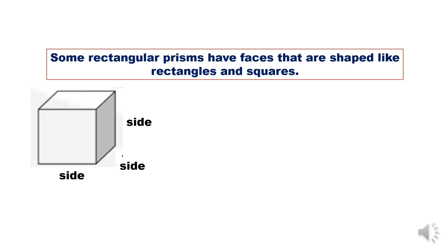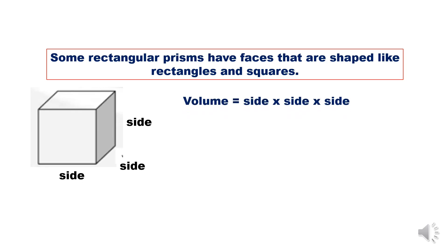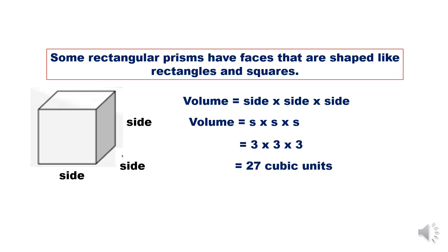The formula for finding the volume of a cube is side times side times side, or V equals S times S times S. For example, if the side is 3, then 3 times 3 times 3 equals 27 cubic units.